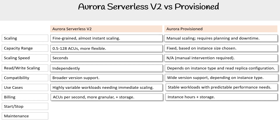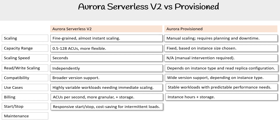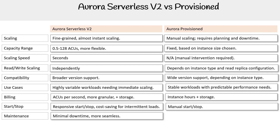The cost is going to be less for provisioned if your workload is stable, but if it's not stable, then serverless makes more sense. It really depends on your use case, or if you don't want to manage anything. For stop and start, serverless is responsive and cost-saving for intermittent loads. You have to manually stop and start for Aurora Provisioned.